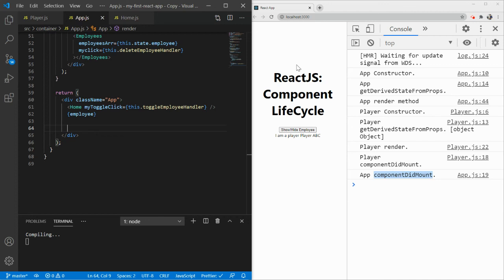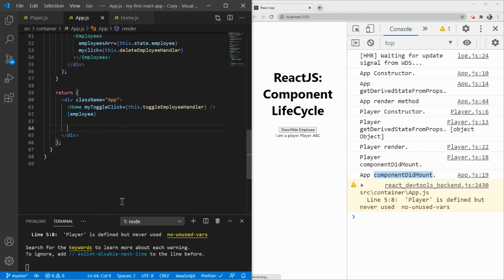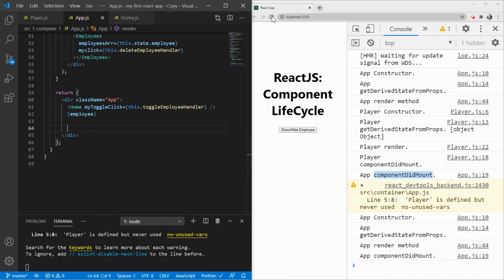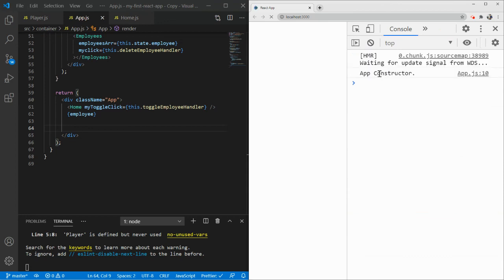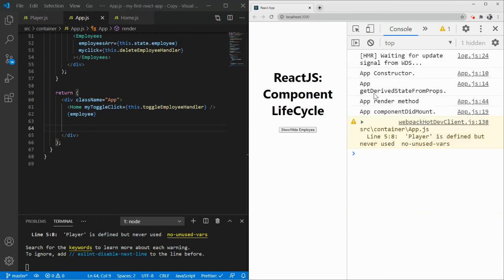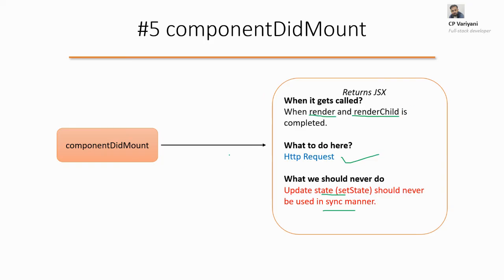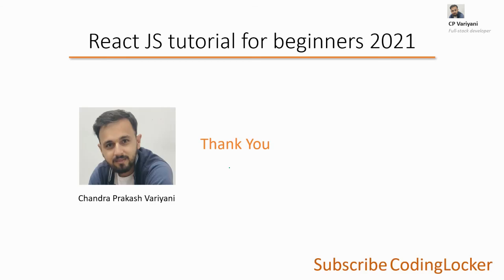Now you can see: App Constructor, getDerivedStateFromProps, App render, and straight away App componentDidMount - no child lifecycle in between. That's what I wanted to explain with a practical example. There are more methods at the time of update as well, and we'll cover those in the next lecture. Thank you for being at Coding Locker.